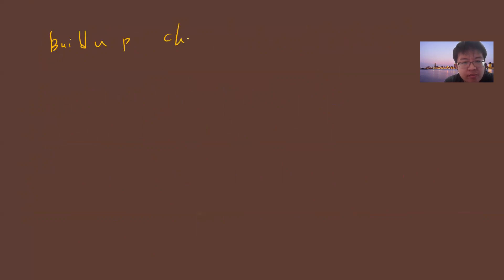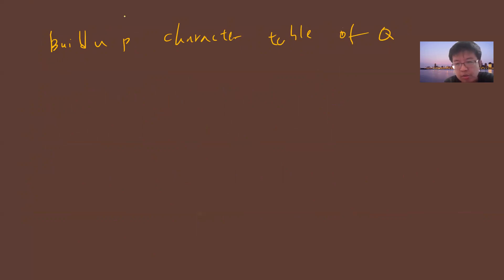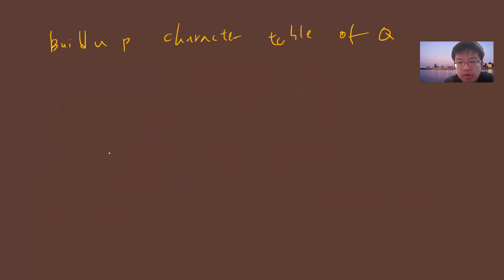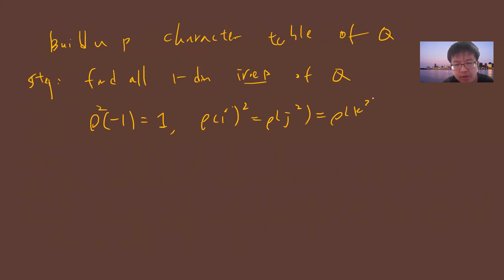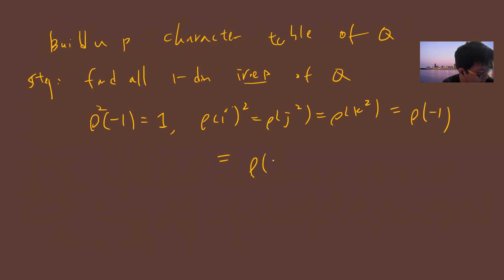Our goal is to build the character table of Q. We start with Step 1: finding all one-dimensional representations. The trivial representation is already one. We note that ρ(-1)² equals ρ((-1)²) = ρ(1) = 1, and similarly ρ(i)² = ρ(j)² = ρ(k)² should equal ρ(-1).